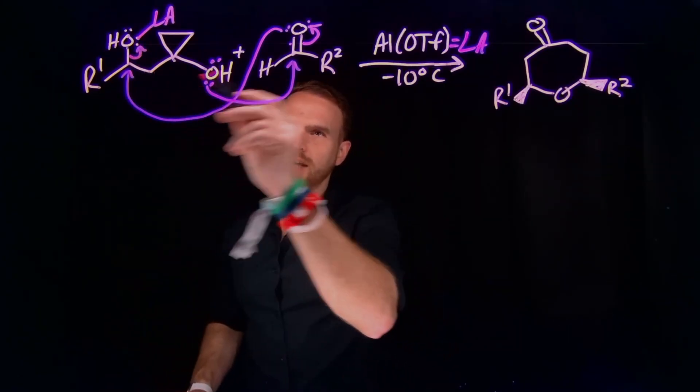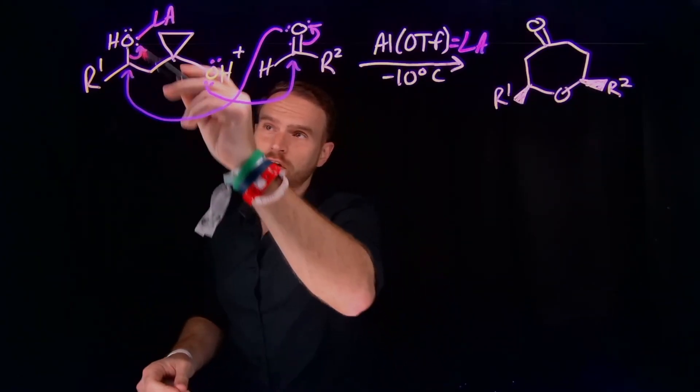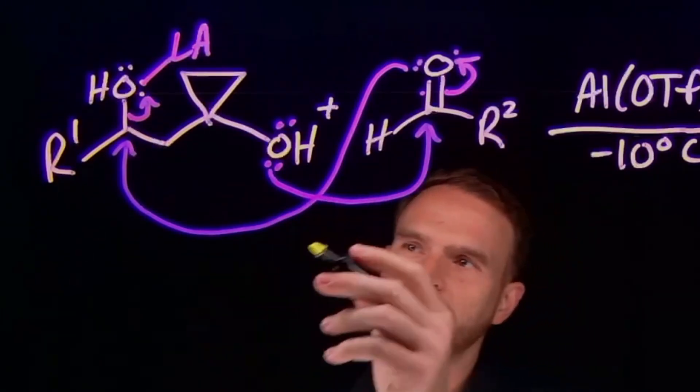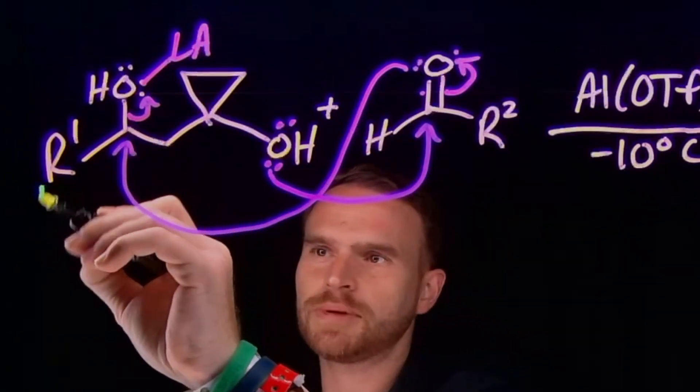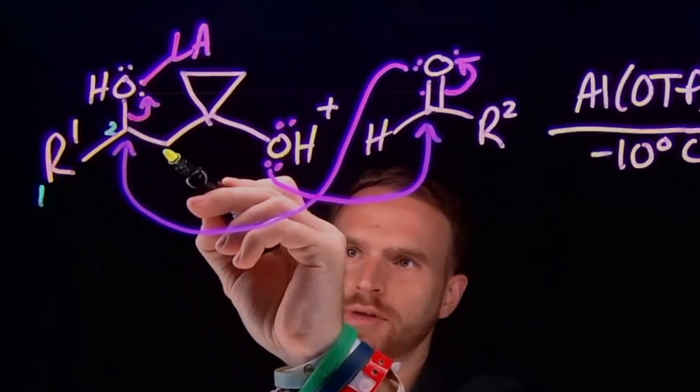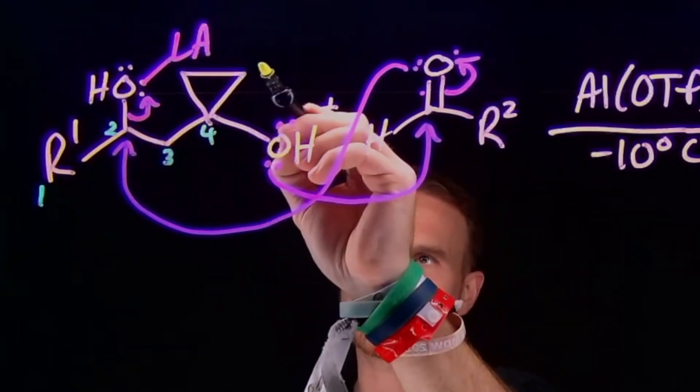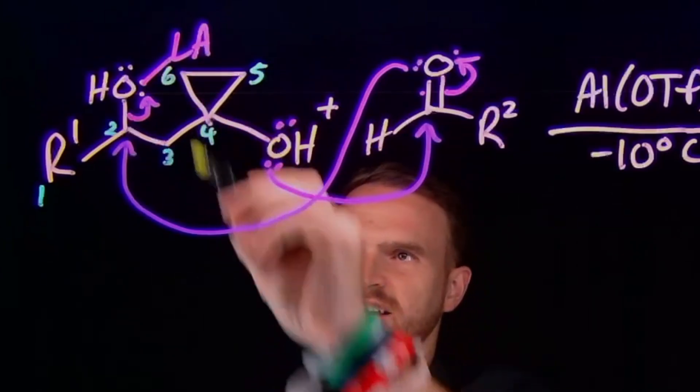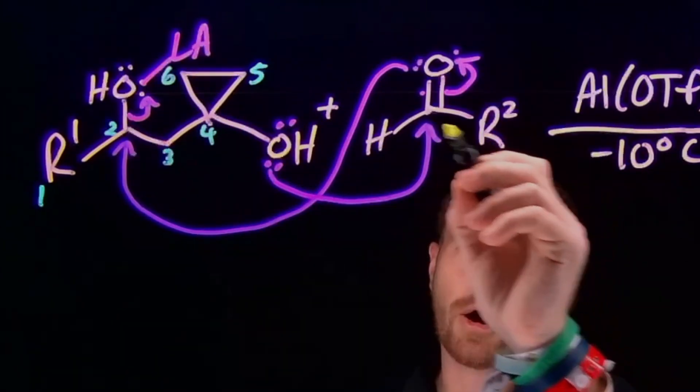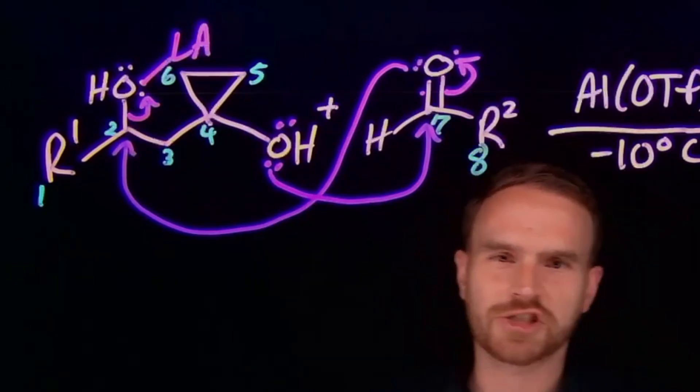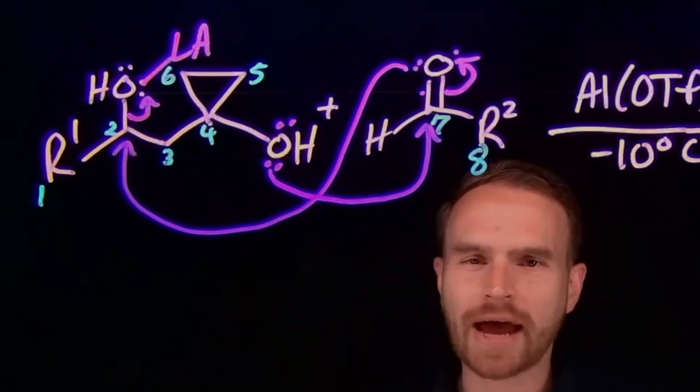So we're forming a new carbon to oxygen bond but we're actually losing a carbon to oxygen bond as well and just to help us keep track of what's going on I'm actually going to number these positions so this is going to be position 1 this carbon will be position 2 so then this one can be position 3 this one can be position 4 we'll say that this is position 5 and this is position 6 and I'll also start numbering on this aldehyde as well and this is going to be position 7 and this one is going to be position 8 and this will help you keep track of what happens in the next transformation.